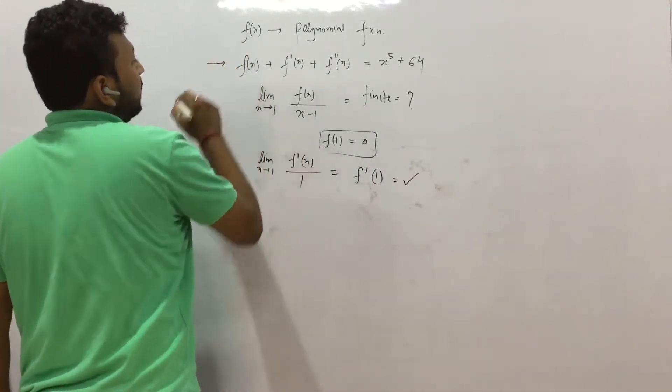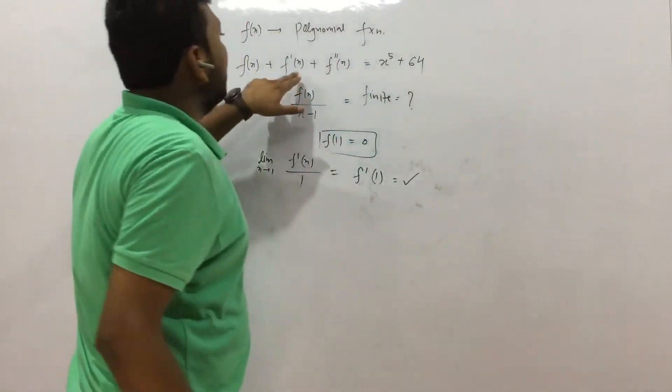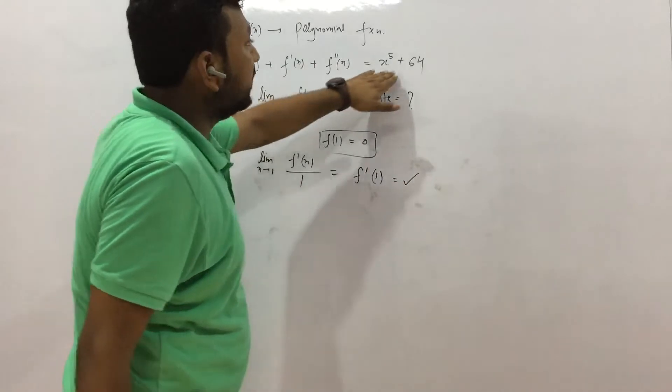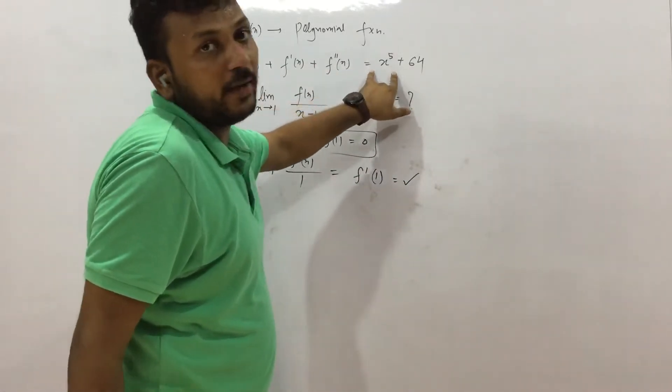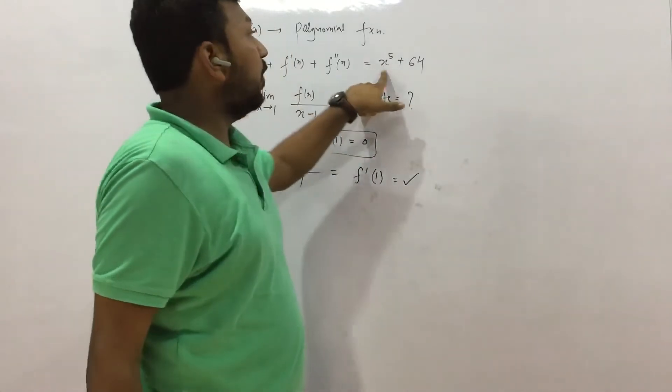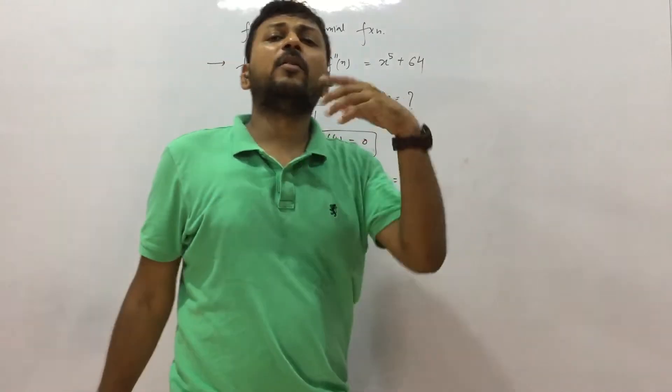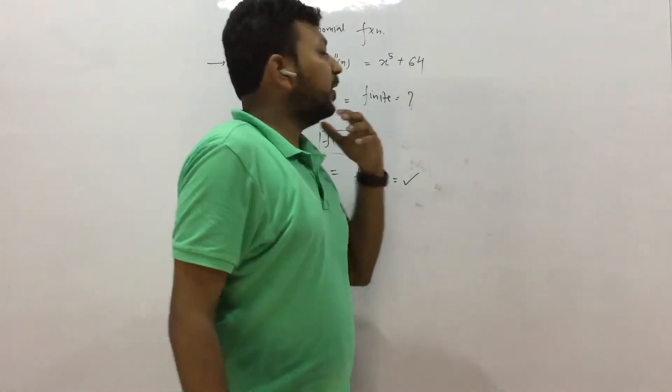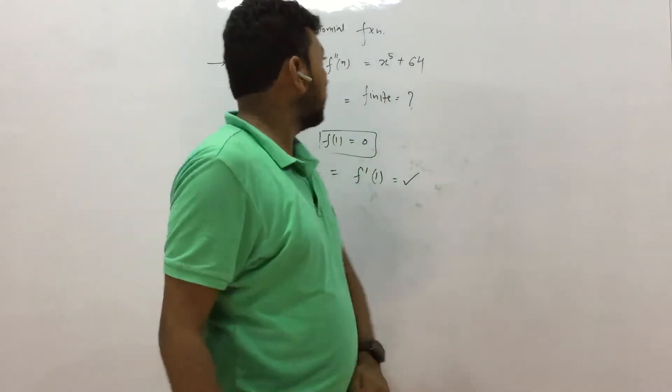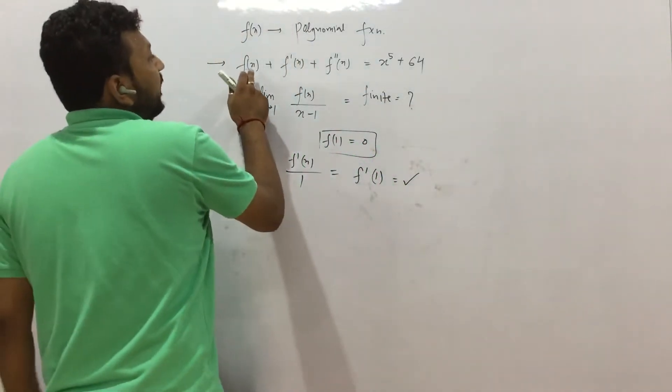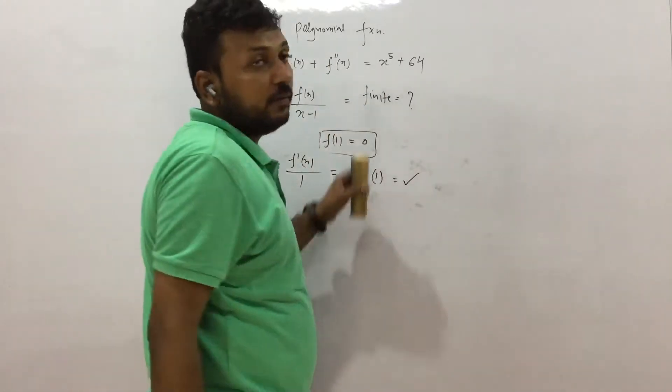So we have two things now. First, f(1) = 0 and f'(1) is the final answer we need to find. From this, let us see: if f(x) is polynomial, if we do the derivative, the degree will decrease, right? And the highest degree after adding all three parts is x^5. That means f(x) is of the power x^5, that is the highest power.